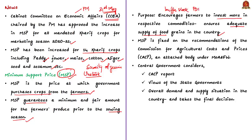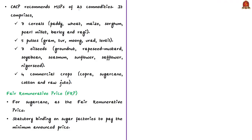The MSP is fixed on the recommendations of the Commission for Agricultural Costs and Prices, in short CACP. This CACP is an attached office under the Ministry of Agriculture and Farmers Welfare. The CACP submits separate reports recommending prices for kharif and rabi seasons, but these are only advisory in nature and not binding on the central government. The central government, after considering these reports and views of state governments, along with overall demand and supply situation, takes the final decision. As of now, the CACP recommends MSPs of 23 commodities including 7 cereal grains, 5 pulses, 7 oil seeds and 4 commercial crops.